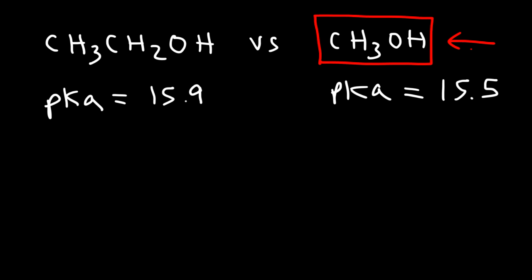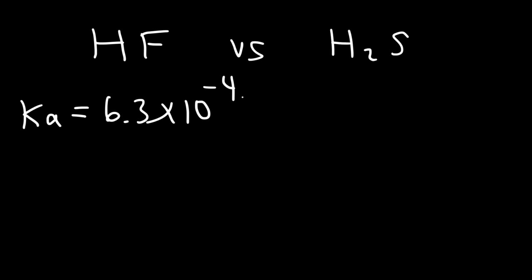Now what if you're given the Ka instead of the pKa? Is the situation the same or is it going to be different this time? So let's say the Ka of HF, also known as hydrofluoric acid, is 6.3 times 10 to the negative 4. The Ka stands for the acid dissociation constant. For H2S, hydrosulfuric acid, the acid dissociation constant is 1 times 10 to the minus 7. So which one is a stronger acid? Is it HF or is it H2S?